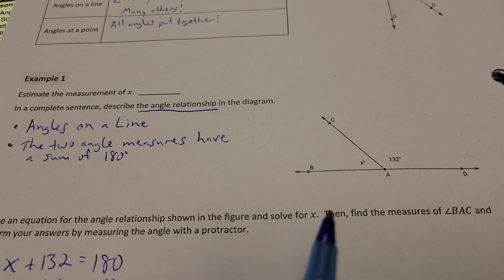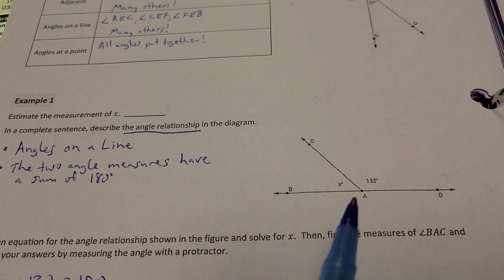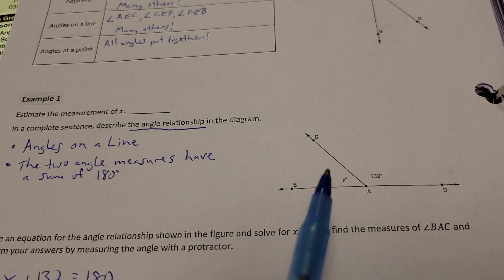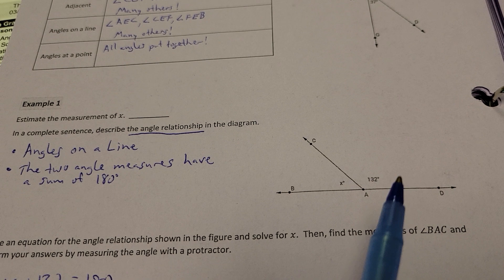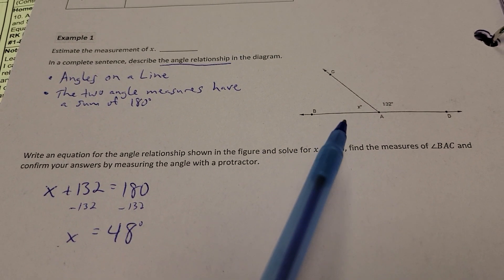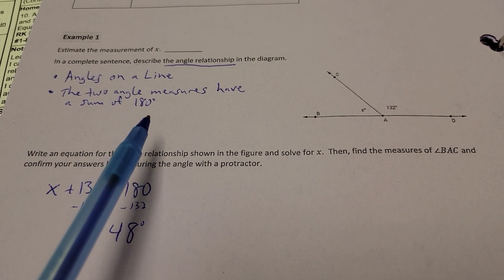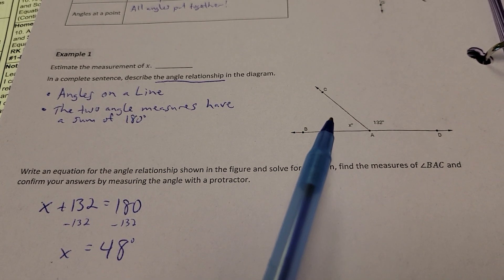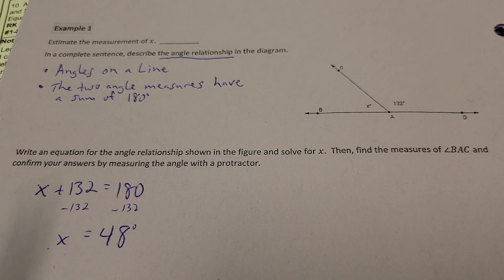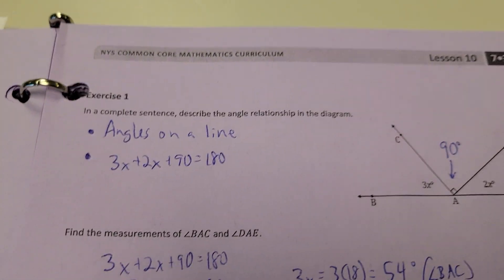So, what is the angle relationship in this problem? Well, this would be considered angles on a line or supplementary angles. The two measures have an angle of 180 degrees. So, I've got this angle and this angle together to make 180. Since we already know that we've got angles on a line or supplementary angles, we know it's going to be 180 degrees for a total. So, all I've got to do is take X plus 132 to equal 180. Take 132 away from each side. X is 48 degrees.